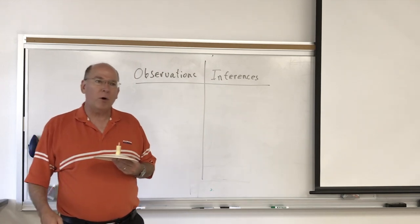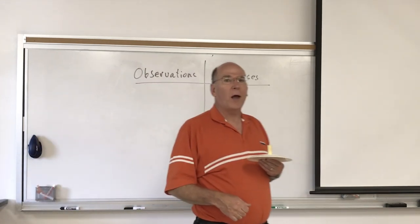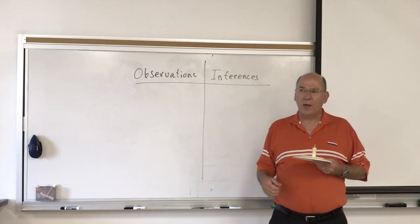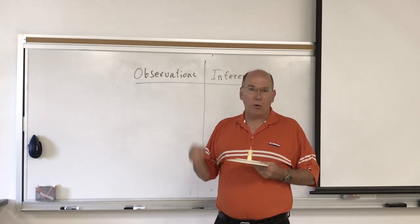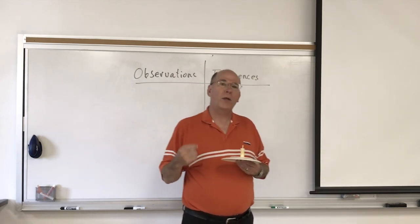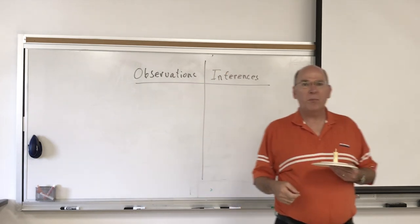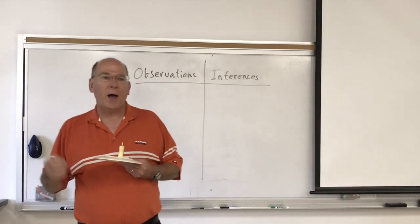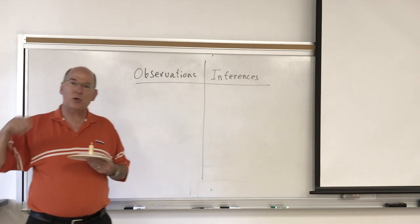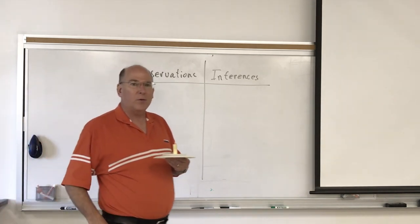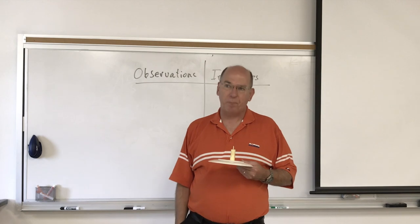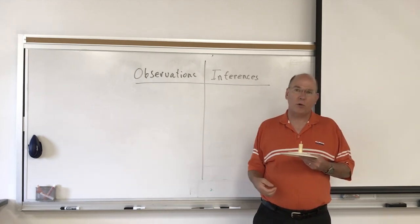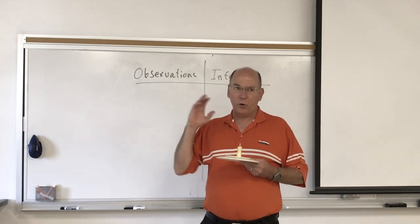I have an object on this plate. I want you to write down two or three observations about it on your paper. If you're thinking 'oh, it's a...' and you identify it, that's an inference — you have to be aware of that. The observations would be things like the shape, the size, the color, maybe a sketch labeled with something like 'it's about five or six centimeters tall.'